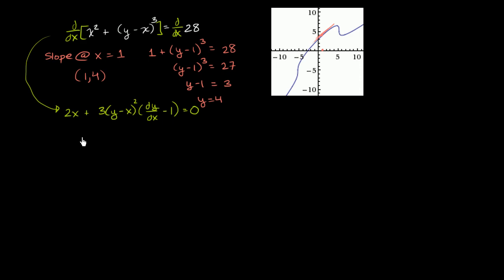Now we need to solve for dy/dx. So we get 2x. And so if we distribute this business times the dy/dx and times the negative 1, when we multiply it times the dy/dx, I'm going to write it over here. So we get plus 3 times (y - x) squared times dy/dx. And then when we multiply it times the negative 1, we get negative 3 times (y - x) squared.